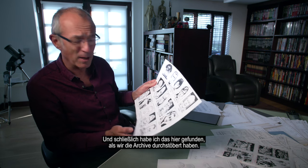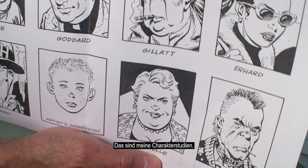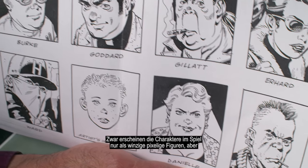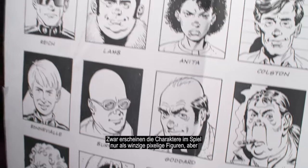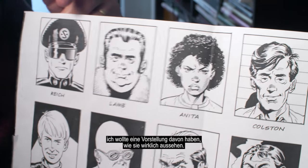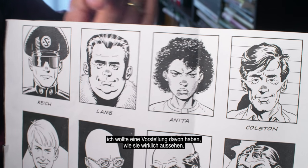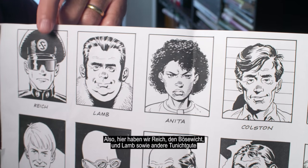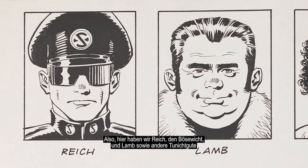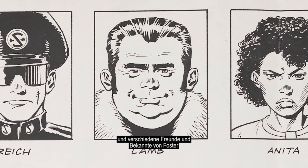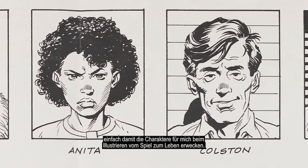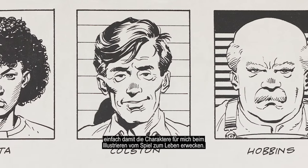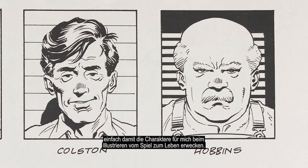Something I came across while we were looking through the archives was this sheet of character studies I did. All the characters in the game only appear as tiny little pixelated figures, but I wanted to have an idea of what they really, really look like. So here's Reich, the baddie, and Lamb, another ne'er-do-well, and various friends and acquaintances of Foster's — just to make the characters sort of live in my mind as I came to do the game artwork.